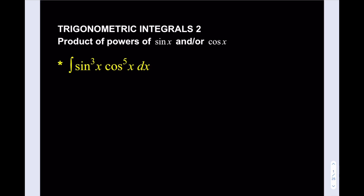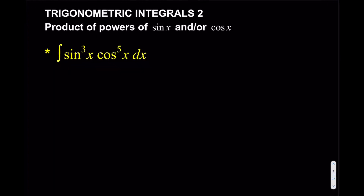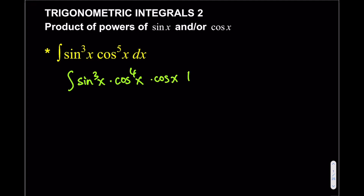Since they're both odd powers, you can actually choose which one to separate. I usually go with cosine if it's available, because that's going to keep things positive. So what I'm going to do first is write this as cosine of x to the 4th power multiplied by cosine x dx.